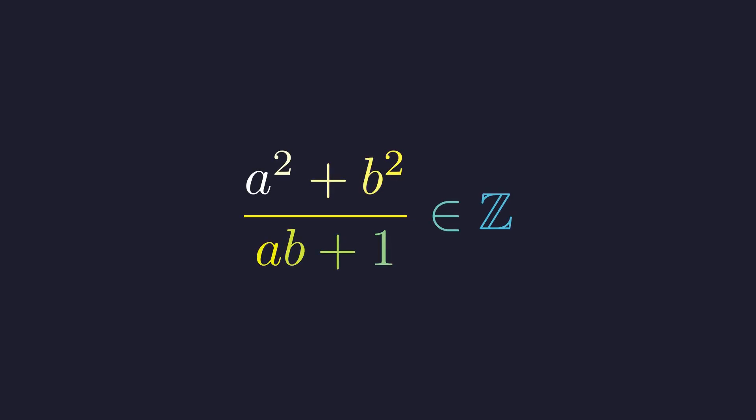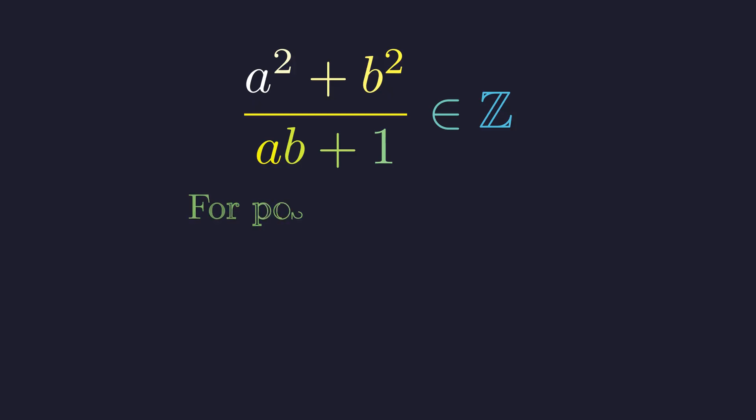Here's a legendary problem from the 1988 International Mathematical Olympiad. When the expression a squared plus b squared divided by ab plus 1 yields an integer for positive integers a and b, what can we say about this integer?